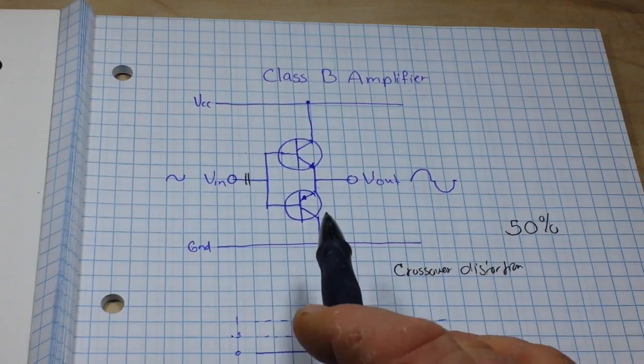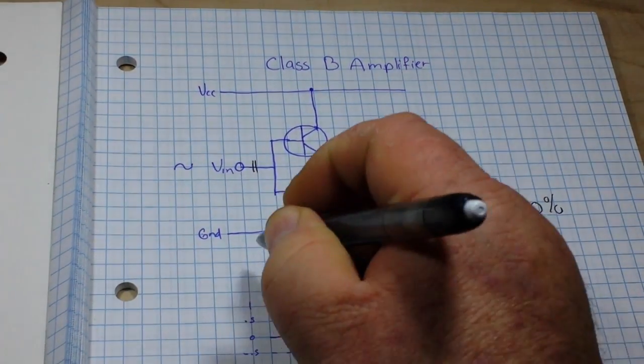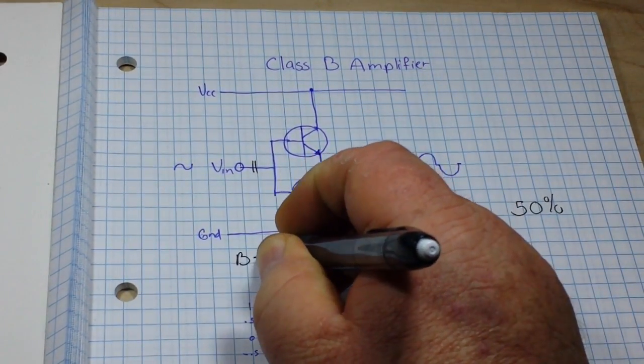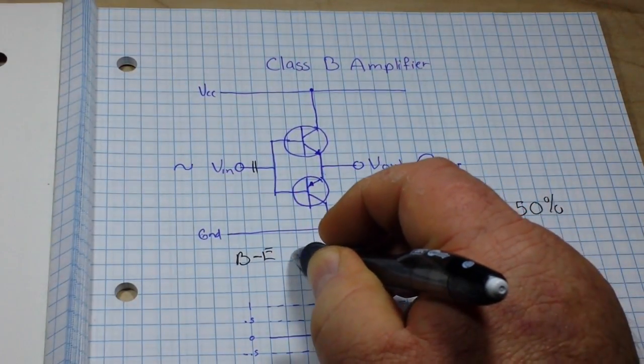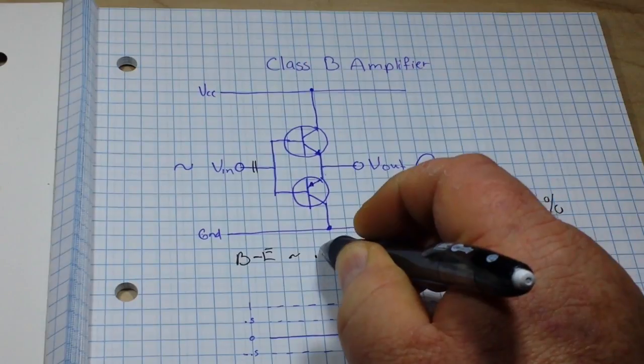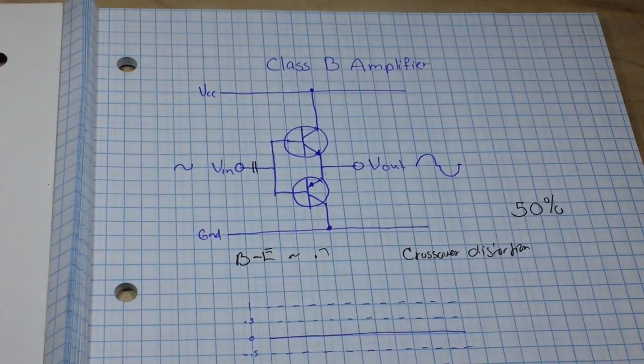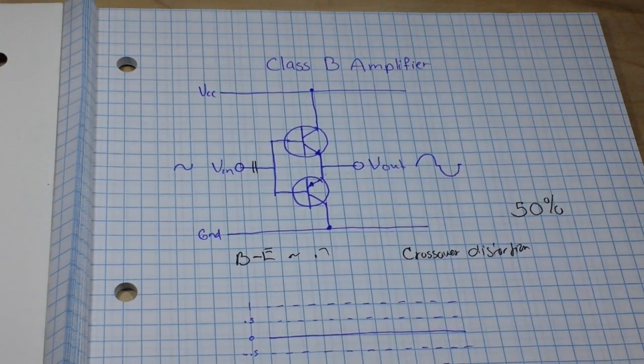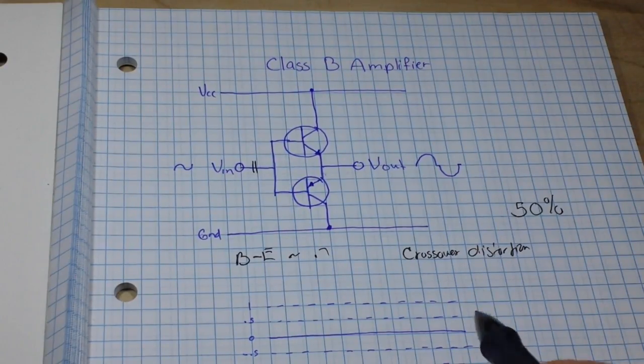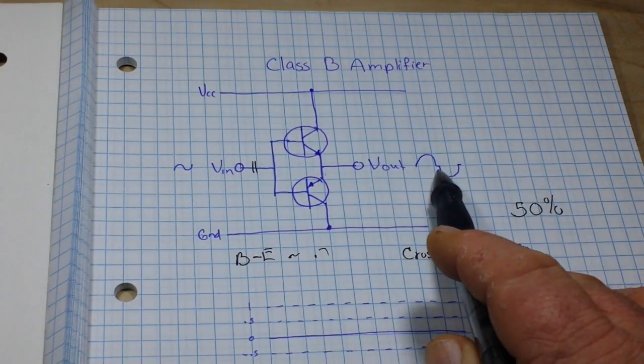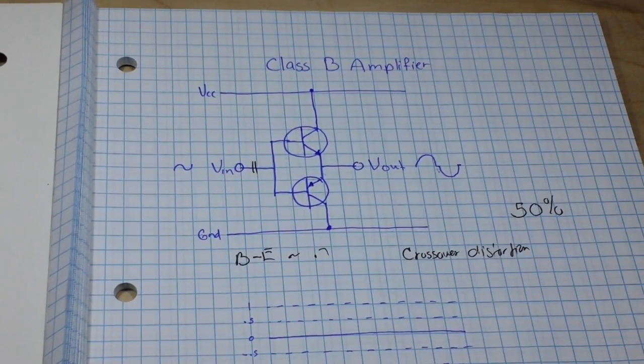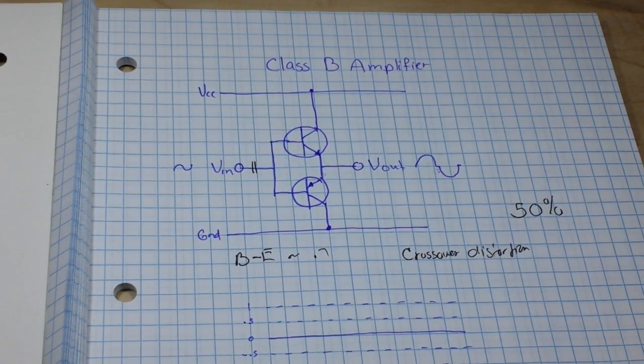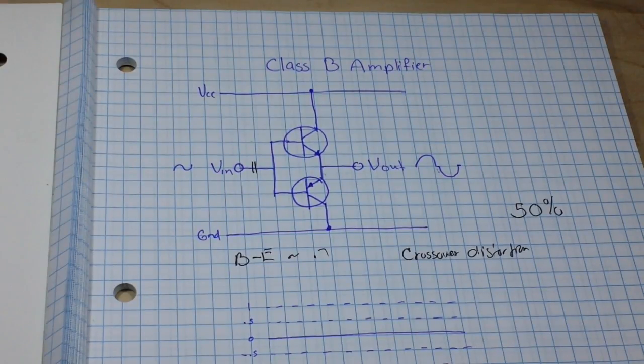These transistors are not going to switch on or transition until we have a base-emitter voltage of about 0.7 volts. So when that waveform is crossing through the zero point, there is not going to be any conduction there. That's the crossover distortion.